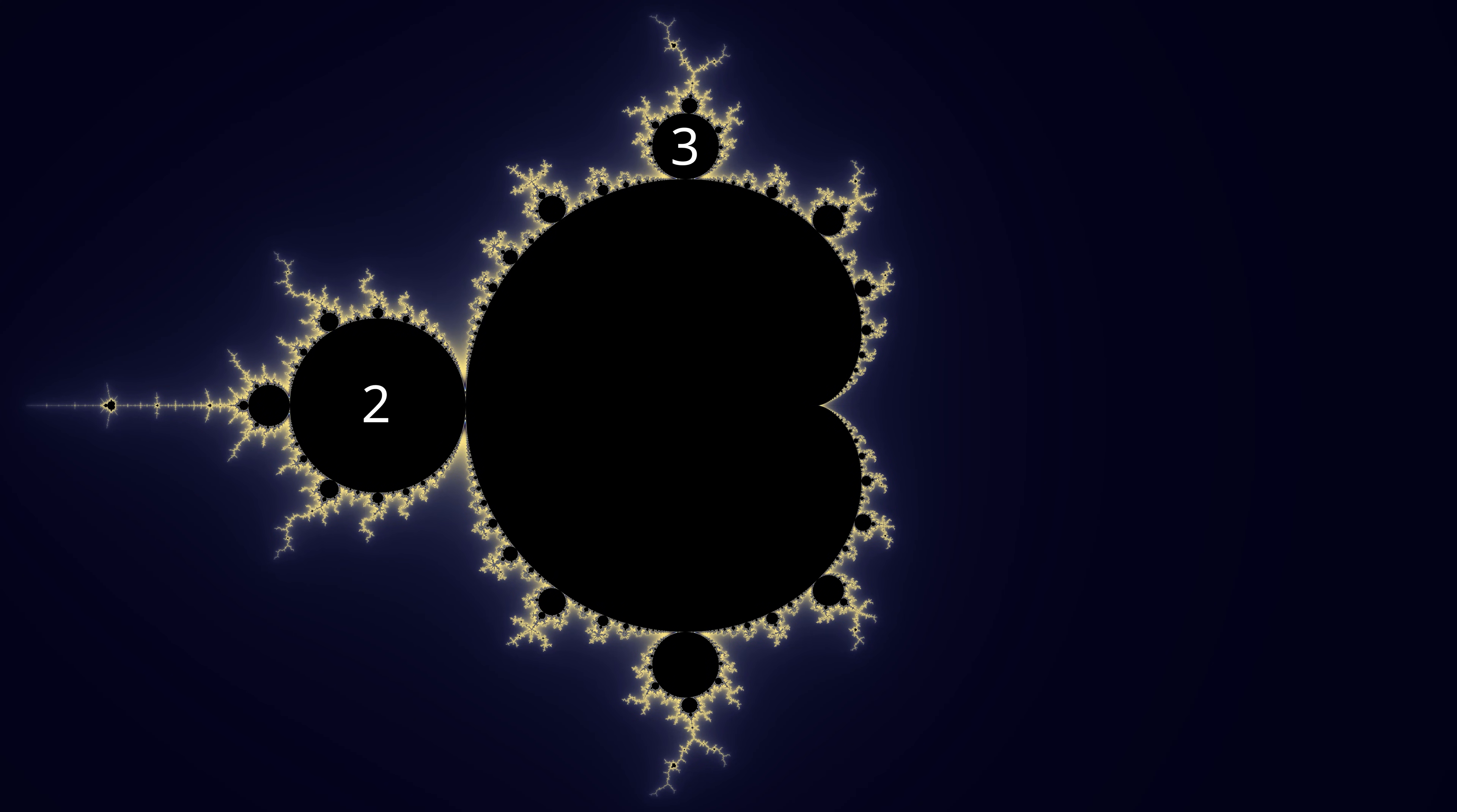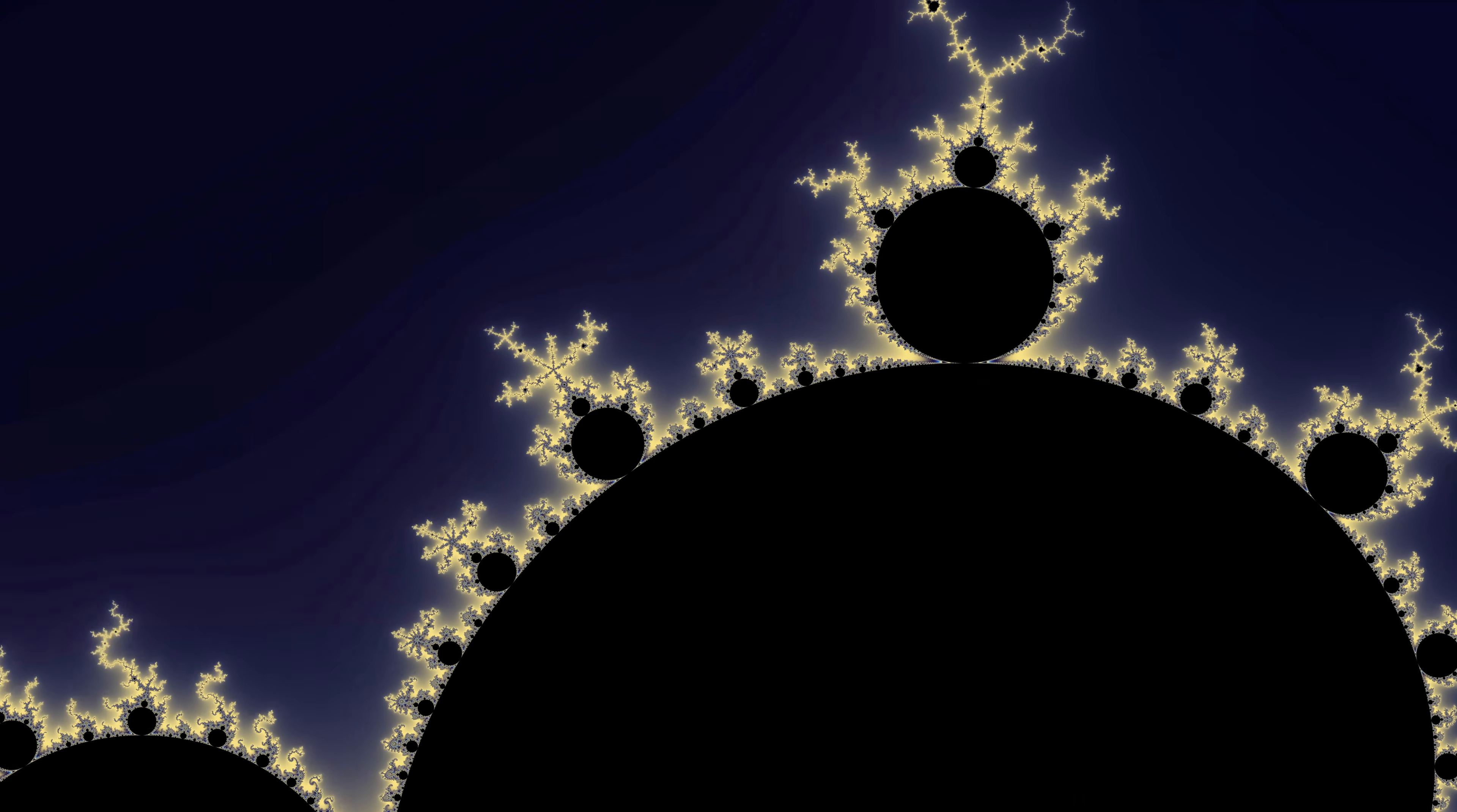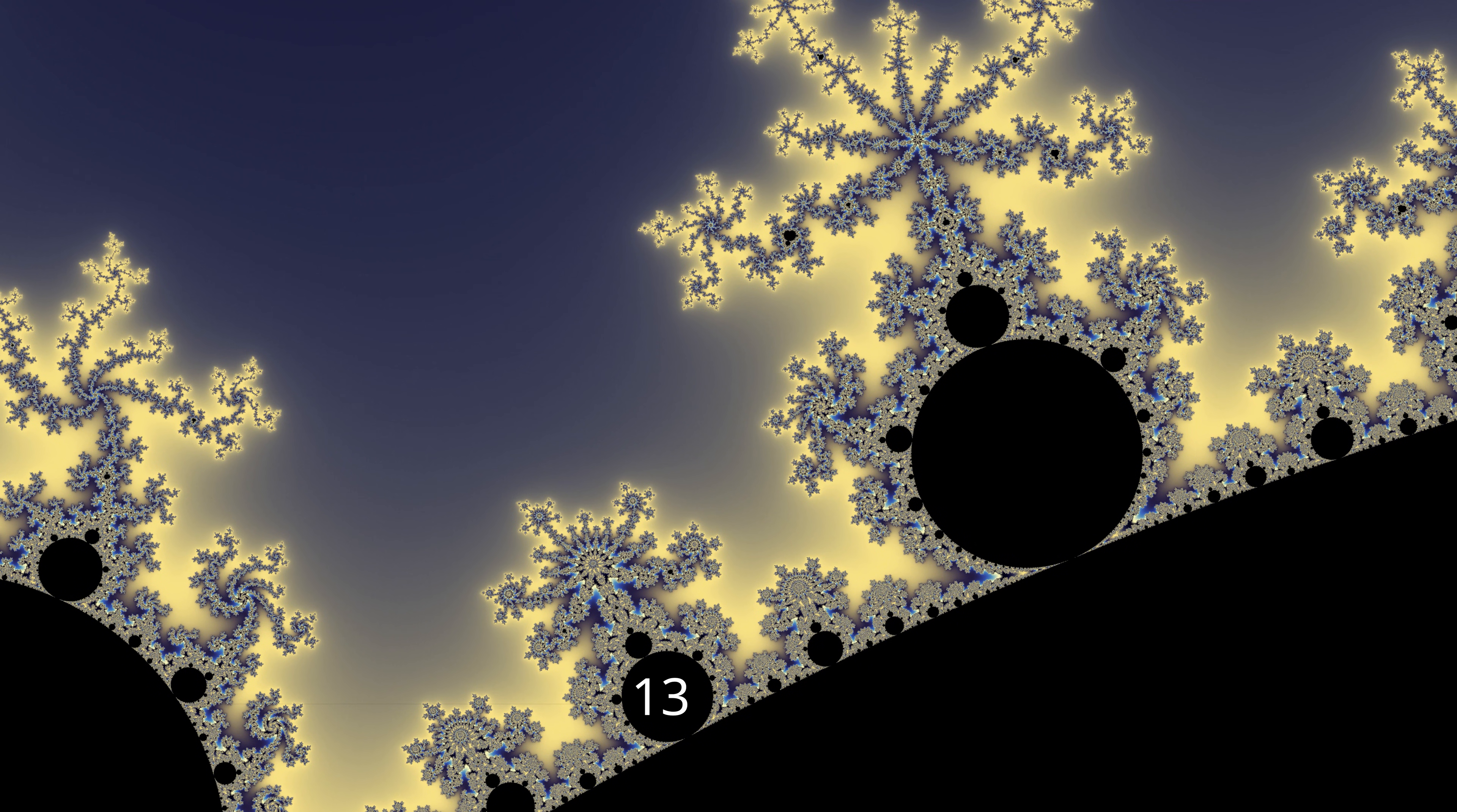For our next sequence, let's start with the period three bulb on top and go to the left towards the period two circle. The biggest bulb between two and three is five. The biggest bulb between three and five is eight. The biggest bulb between the most recent bulbs, five and eight, is a period thirteen bulb. Do you recognize the sequence? It is the Fibonacci sequence.